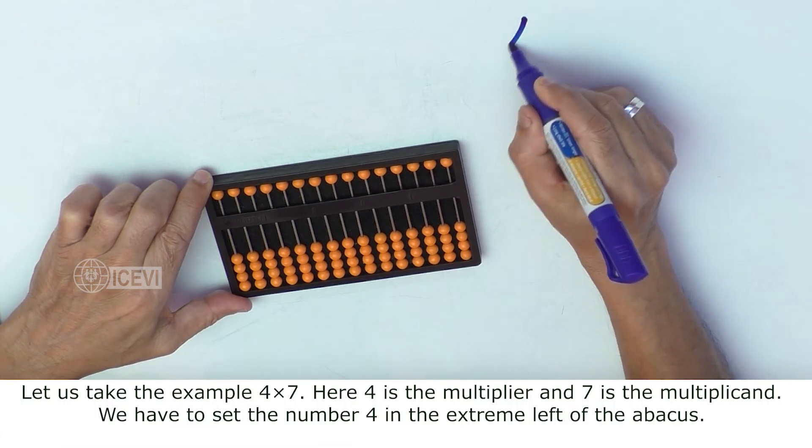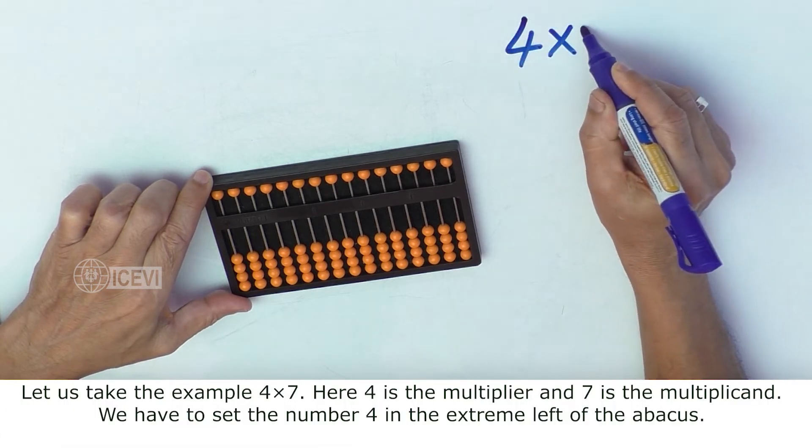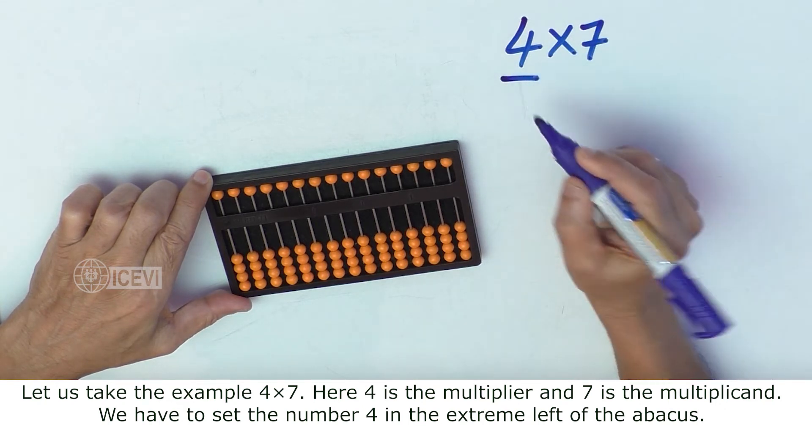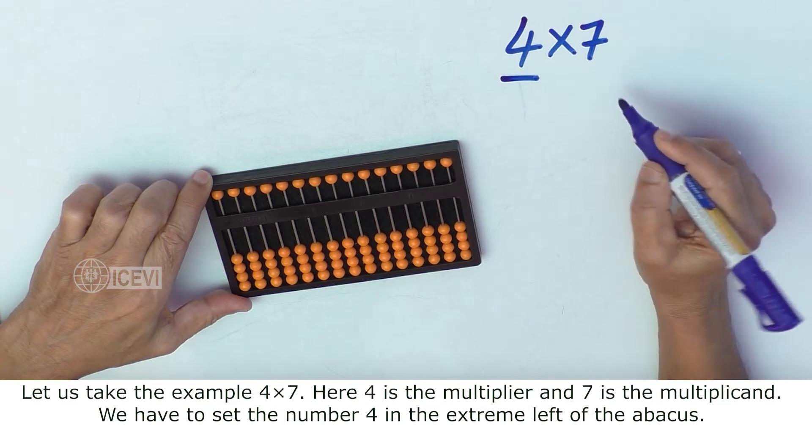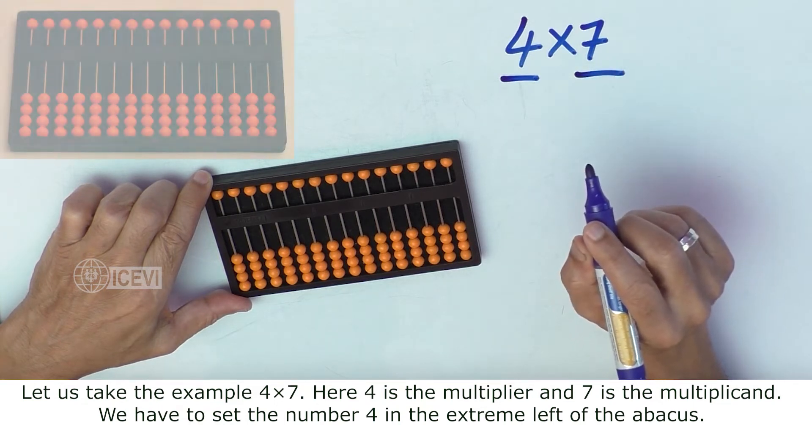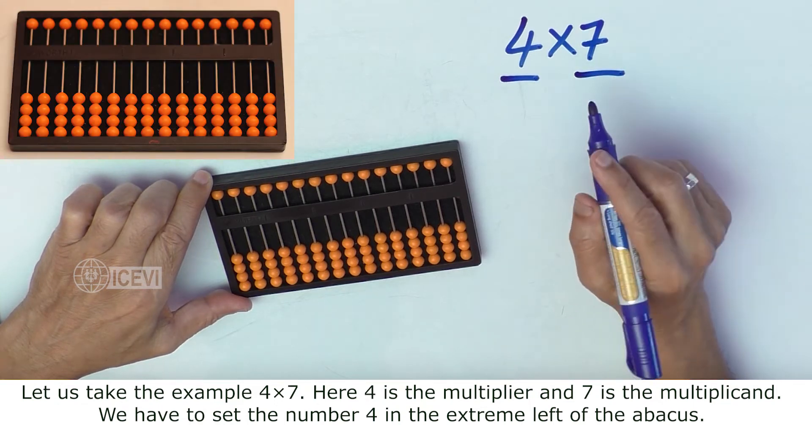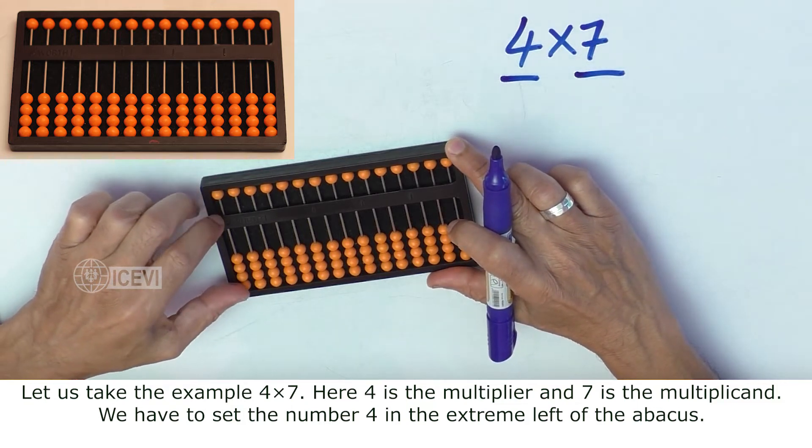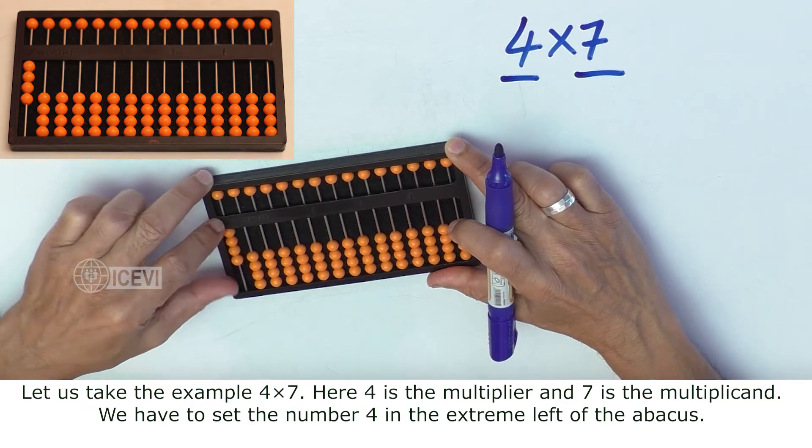Let us take the example 4 multiplied by 7. Here, 4 is the multiplier, 7 is the multiplicand. We have to set the number 4, which is the multiplier, in the extreme left of the abacus.